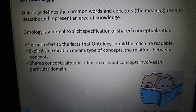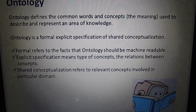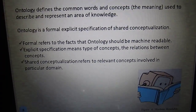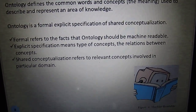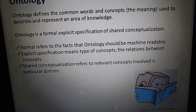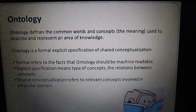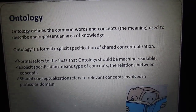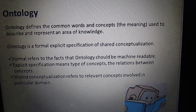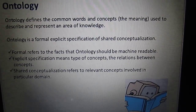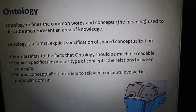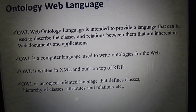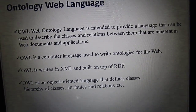Ontology is a formal, explicit specification of shared conceptualization. 'Formal' refers to the fact that the ontology should be machine-readable. 'Explicit specification' refers to the types of concepts in a domain. 'Shared conceptualization' refers to agreed concepts within a particular domain. For example, to develop an ontology for a research institute, the domain is 'university', and the concepts are students, professors, courses, and departments — these form the explicit specification. To develop an ontology, we use several tools like Protégé, OntoStudio, and Composer.